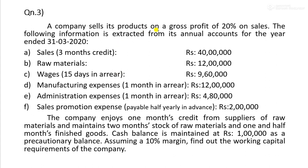Another question: a company sells its products on a gross profit of 20% on sales. The following information is extracted from its annual accounts for the year ending 31st March 2020. Sales with 3 months credit amount to 40,000.